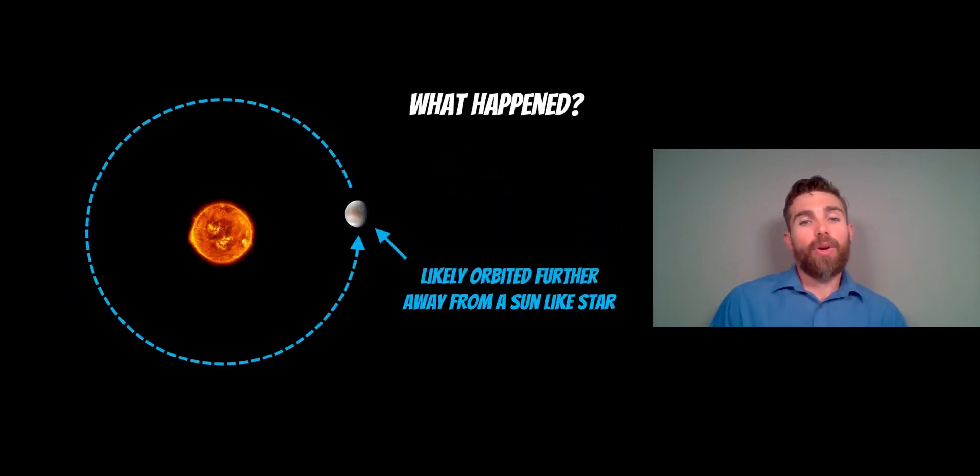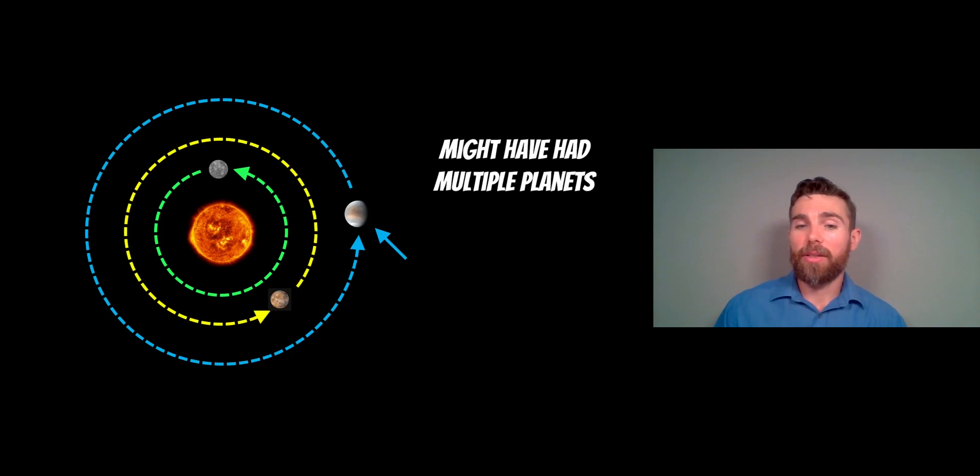So what happened? How did this system come to be? Because it's a very unusual system and it didn't form like that. We know from stellar evolution that white dwarf stars are the end point of sun-like stars. It's likely that this planet orbited a star not dissimilar to our sun and it likely orbited much further out, comparable to some planets in our system. Much earlier on it may even have had multiple planets - we've only discovered one orbiting this white dwarf but it could have had multiple planets much further in or further out.